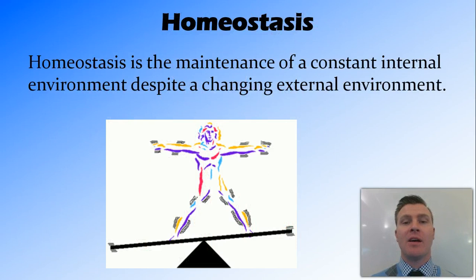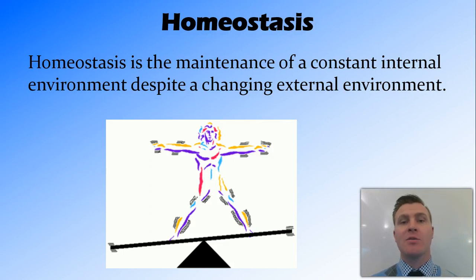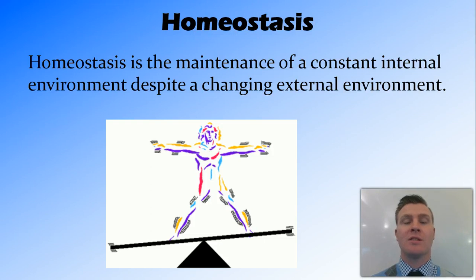Homeostasis is the maintenance of a constant internal environment despite a changing external environment. What this means is that for these reactions to occur — for example, for respiration to occur inside the cells — the cells have to stay at a constant internal environment which is conducive for those reactions to occur. So it doesn't matter whether it gets hotter or colder outside of the organism; the cells need to stay at the same temperature for these reactions to occur efficiently.